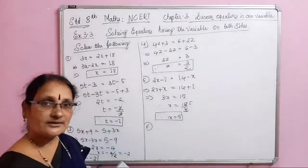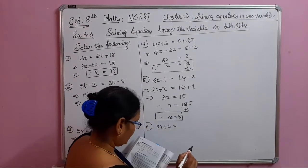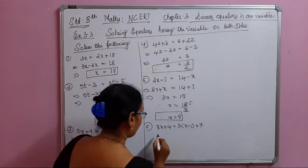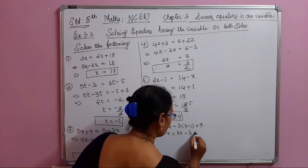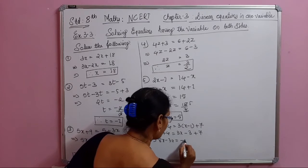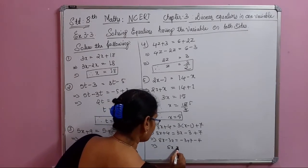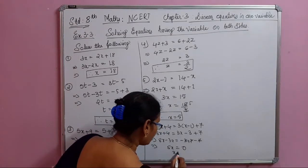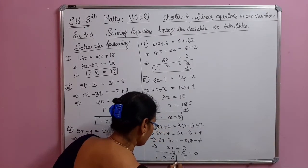The sixth problem is 8x plus 4 equals 3 into bracket x minus 1, plus 7. Expanding: 8x plus 4 equals 3x minus 3 plus 7. Transposing: 8x minus 3x equals minus 3 plus 7 minus 4. So 5x equals 0, therefore x equals 0.